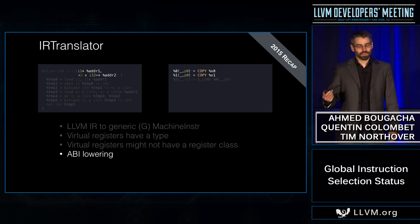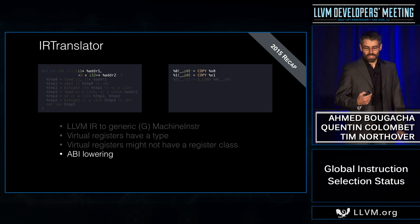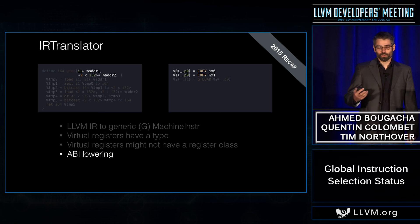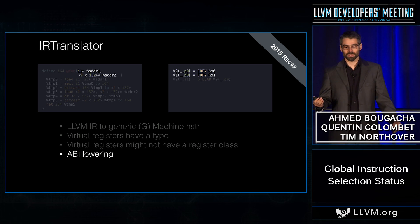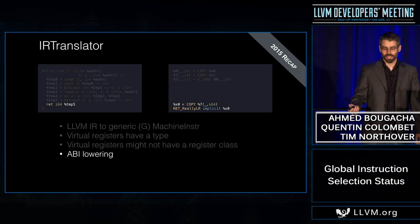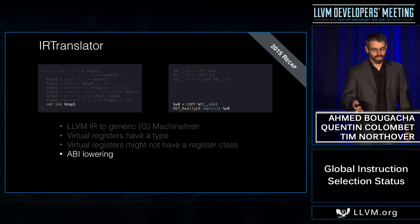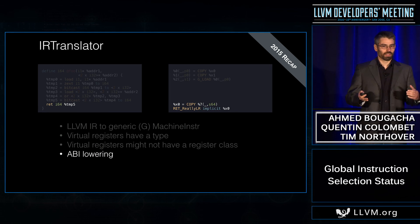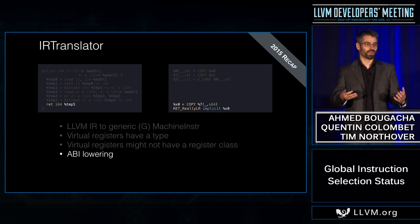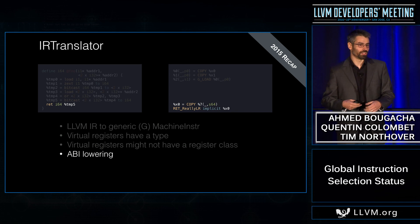The IR translator is also responsible for ABI lowering. On AArch64, two input arguments go into two different registers — X0 and X1 — and we have copies for that. Likewise, the return value is also lowered: for AArch64 that would be a copy to the X0 register, and then a target-specific instruction. One thing to notice is that generic machine instructions are really an extension of machine instructions, so you can mix both target-specific and generic opcodes as you want, and it just works.